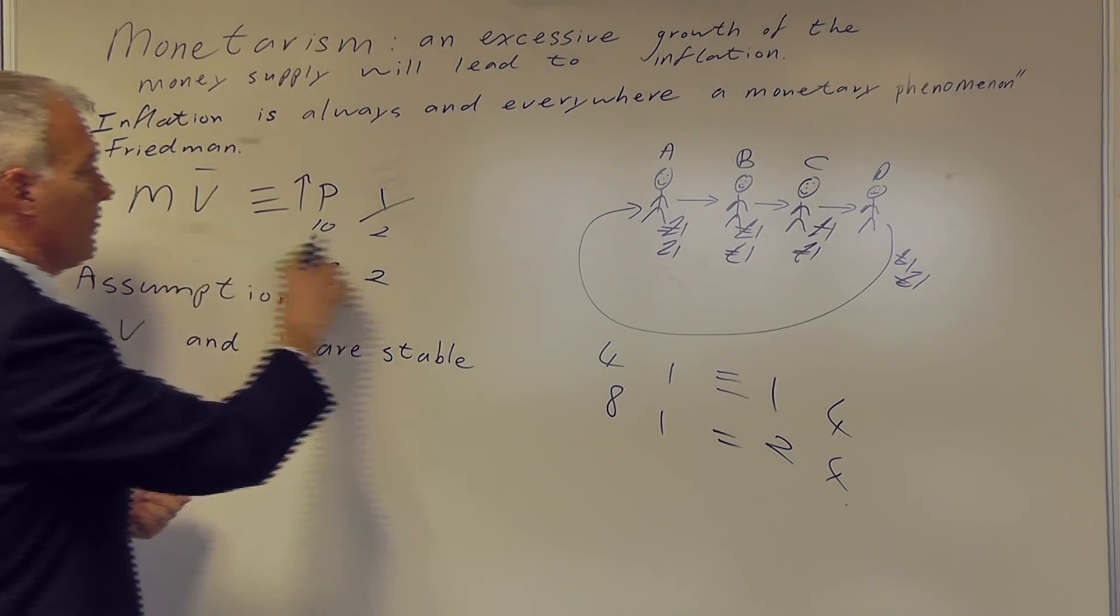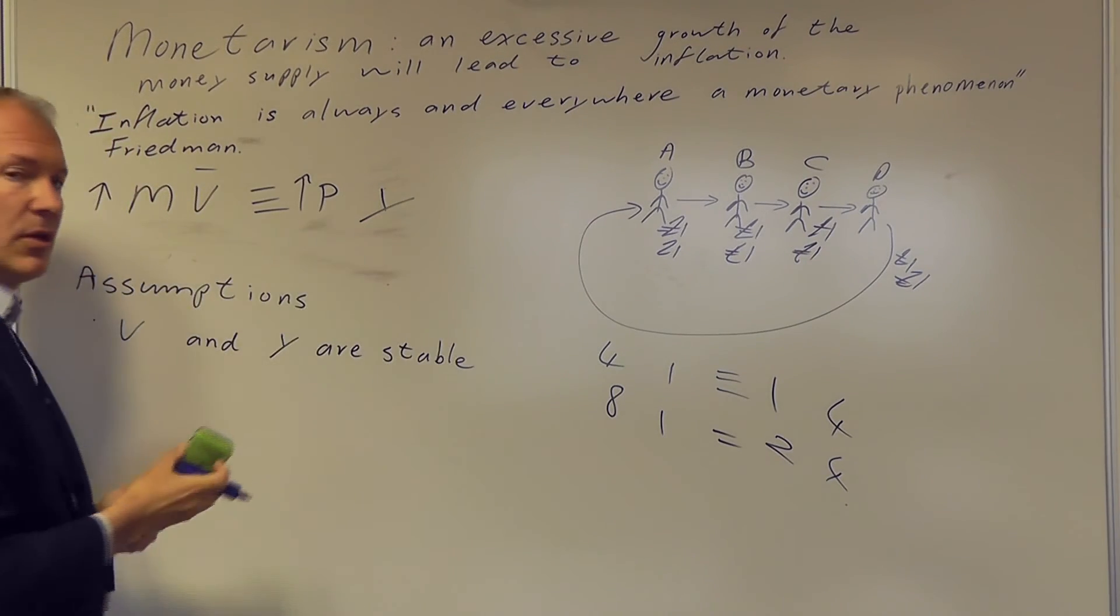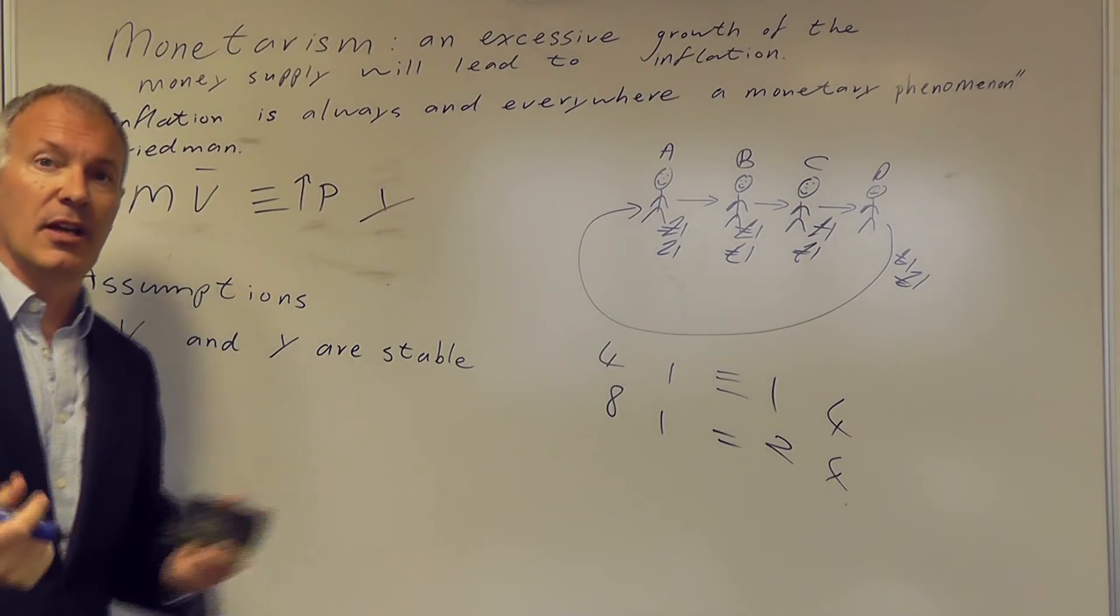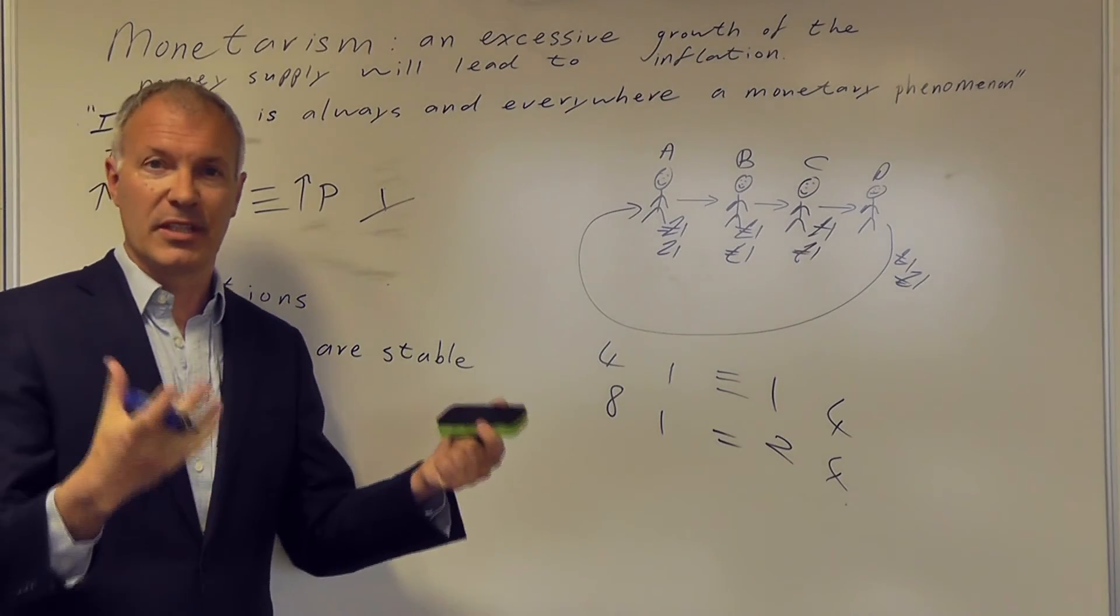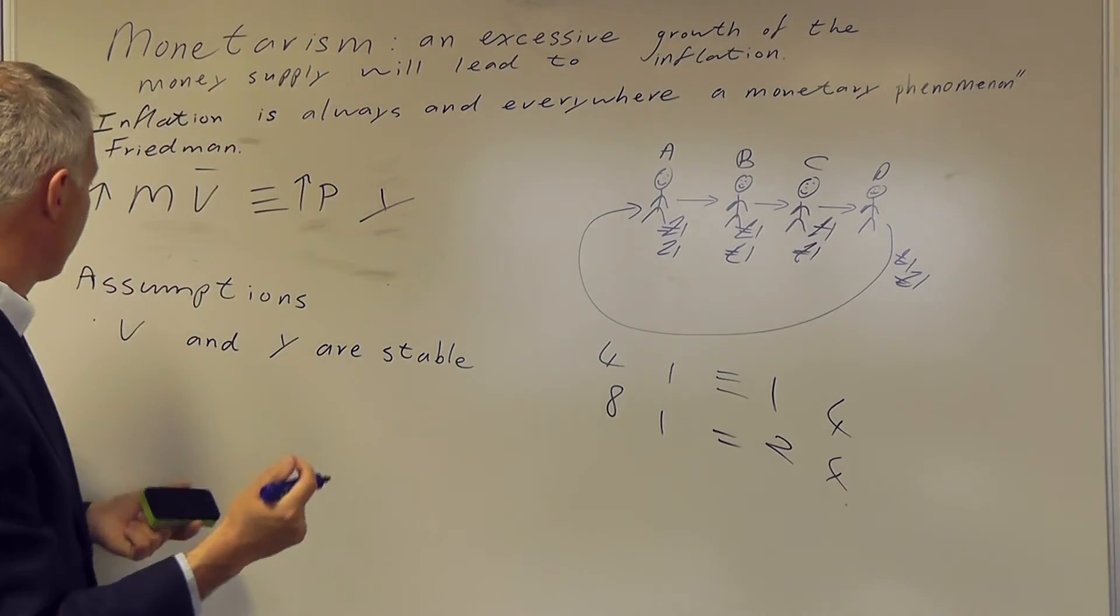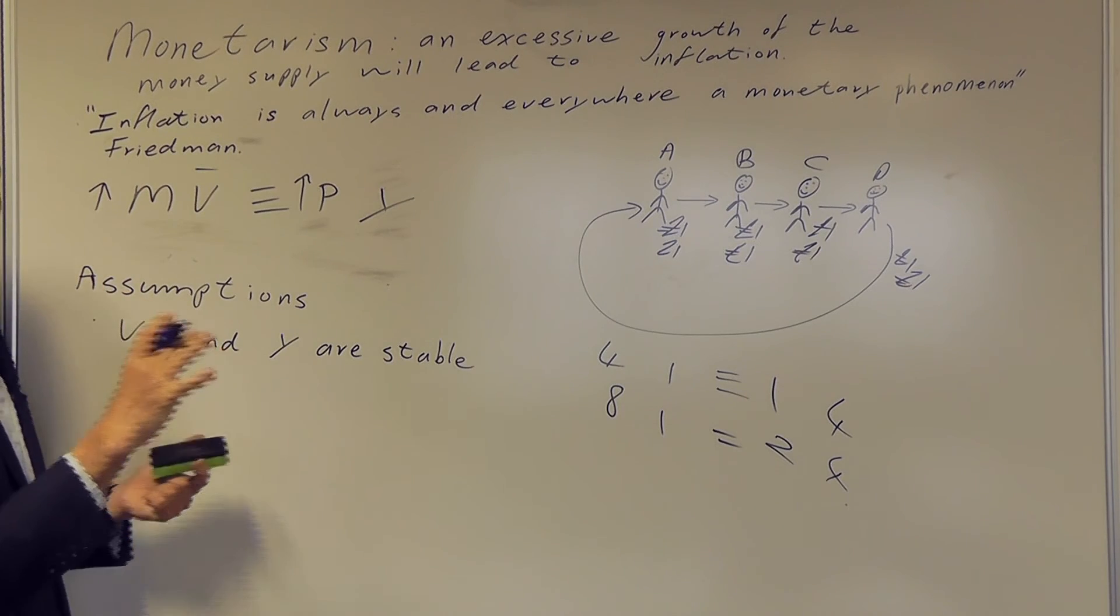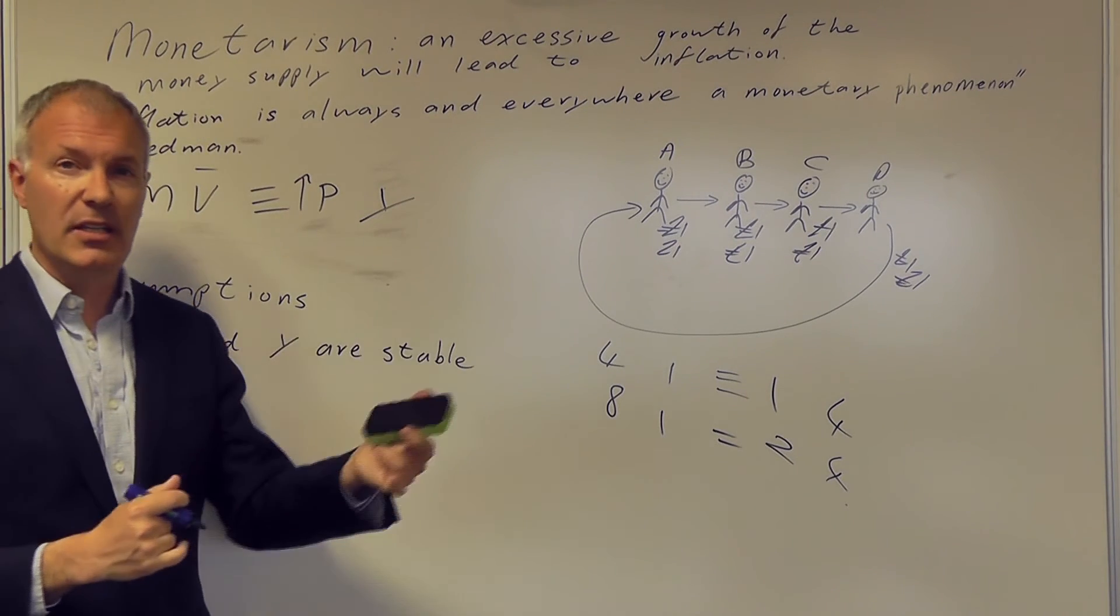Now, the key thing about monetarism is it seems to work when you have huge increases in the money supply, such as occurred in the Weimar Republic in the 1920s. However, it seems problematic, for example, in the 1980s.